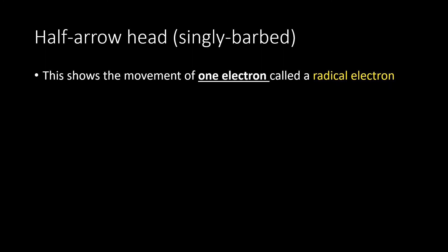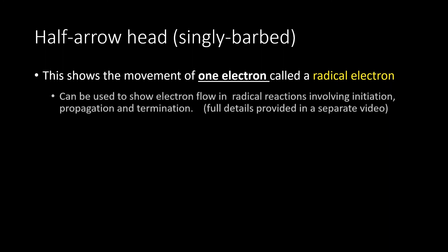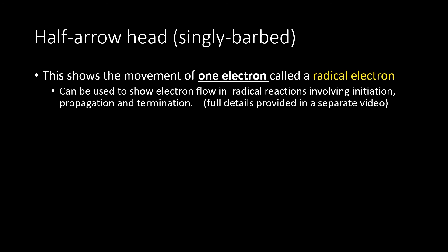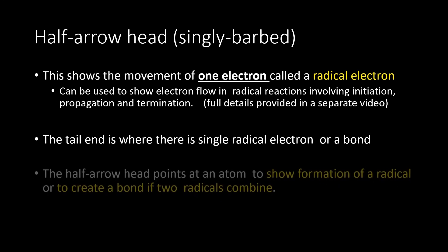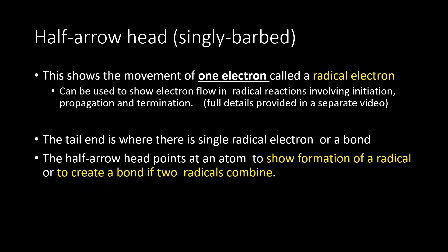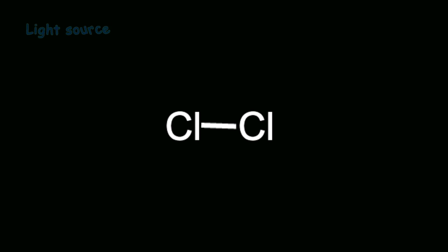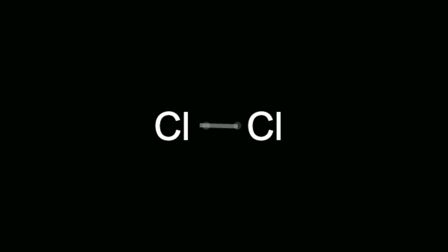The half arrowhead or singly barbed arrow shows the movement of one electron, called a radical electron. This can be used to show the mechanism or electron flow in radical reactions involving initiation, propagation, and termination — full details are available in a separate video. The tail end is where there is a single radical electron or bond, and the half arrowhead points to an atom to show the formation of a radical, or to create a bond if two radicals combine. This animation shows the initiation process, involving a light source or heat to break the weak chlorine-chlorine bond (243 kJ/mol) to make two radicals.